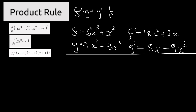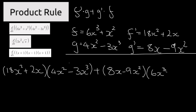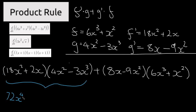Keep in mind these terms need to be multiplied — we're going to end up with a lot of terms. Applying the product rule: (18x² + 2x) multiplied by (4x² − 3x³), plus (8x − 9x²) multiplied by (6x³ + x²). Expanding the first bracket: 18 by 4 gives 72x to the power of 4; 18 by negative 3 gives negative 54x to the power of 5; plus 8x to the power of 3 minus 6x to the power of 4.